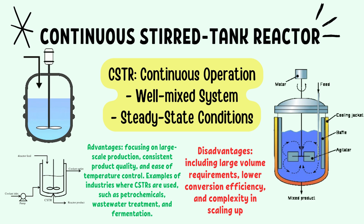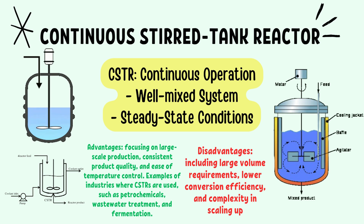The beauty of the CSTR lies in its ability to maintain steady-state operation. Once the system reaches equilibrium, the concentration of reactants and products remains constant over time. This makes CSTRs ideal for processes that require a continuous output, like the production of bulk chemicals where consistency and efficiency are key. It is important to first achieve equilibrium, after which reactants can be continuously added and products continuously collected.